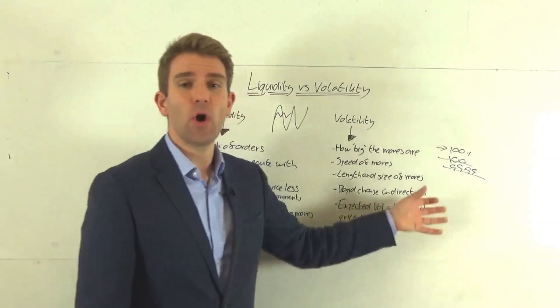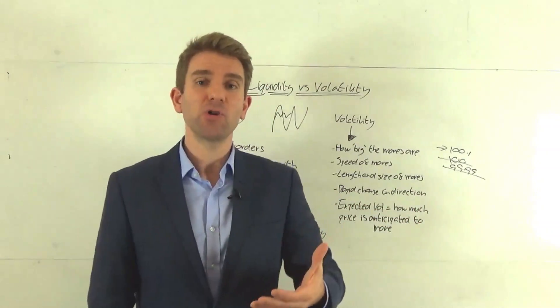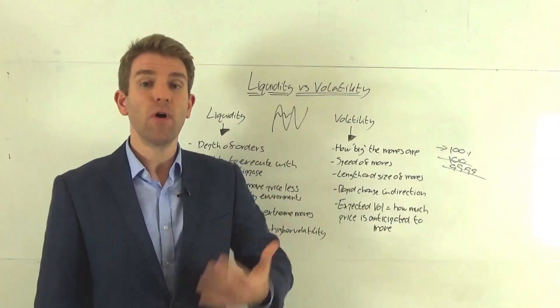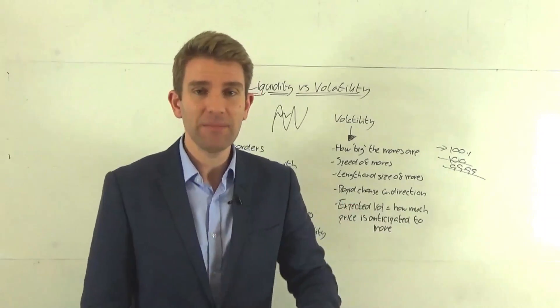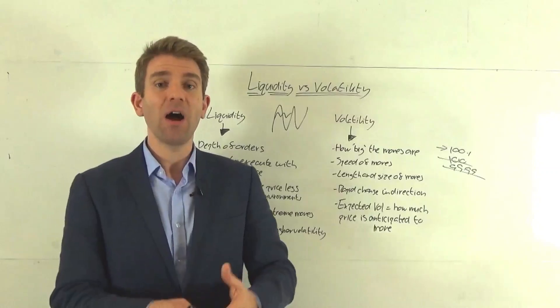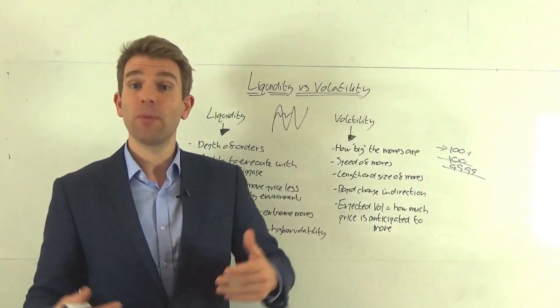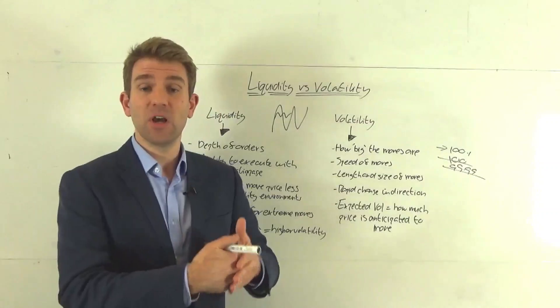And the final one here for you guys is expected volatility is how much price is anticipated to move. So this is used with options pricing, expected volatility, how much that actual instrument is expected to move over a period of time. That's the expected volatility. The higher the volatility, the more expensive generally an option is going to be. So for example,